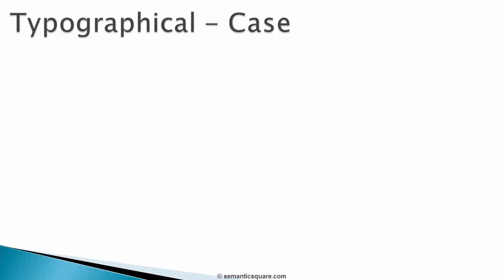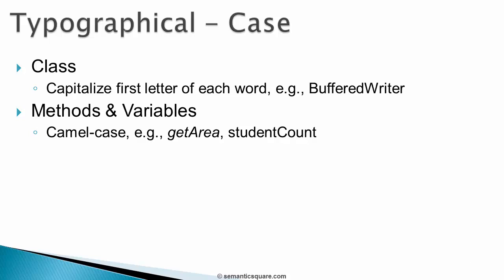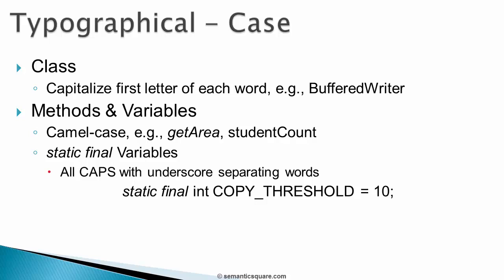Next, let's look at classes, methods and variables, starting with what case to use. For classes, capitalize the first letter of each word — this also applies to interfaces. For methods and variables, use camel case, which is the same as classes but the first letter is not capitalized. When it comes to static final variables, they need to be in all caps with underscores separating words.